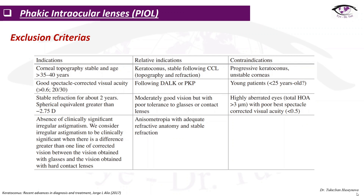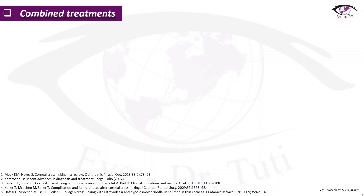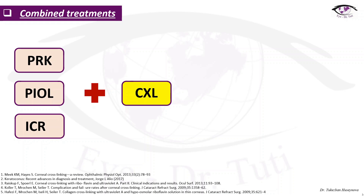A table presents exclusion criteria for phakic intraocular lens implantation for keratoconus patients. Exclusion criteria for keratoconic patients who could be candidates for PRK surgery are: advanced or progressive keratoconus, keratometry more than 56 diopters, pachymetry less than 440 microns, large displacement of the apex, and presence of scars or rupture of the Bowman membrane. There are also combined treatments combining PRK, phakic IOL implantation, or ICR surgery with cross-linking, with inclusion and exclusion criteria to consider.